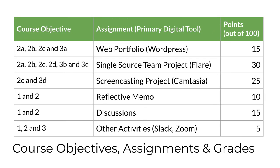The table lists the assignments you'll complete in the course along with the learning objectives they support and the way in which each of them contribute to your course grade. You're going to build a portfolio website using WordPress, write modular content and publish it using single source principles with Madcap Flare, produce a user guide as a screencast with Camtasia, and communicate with the instructor and your classmates using Slack and Zoom. You'll find details about every assignment on Canvas, including the criteria by which your performance is going to be evaluated. At the beginning of each module on Canvas, you'll find a short video in the module overview where I'll provide guidance on completing the assignments for that week.